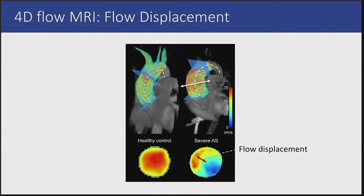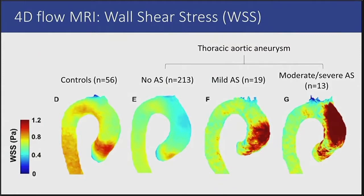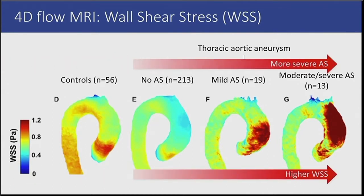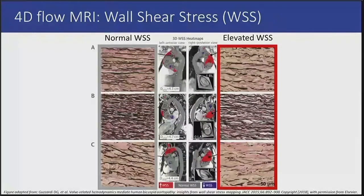If we look at why flow displacement could induce aortic dilatation, wall shear stress is a useful parameter to consider. It is defined as the viscous force of flowing blood acting tangentially on the vessel wall. With 4D-flow MRI, we can measure near-wall velocities and then calculate the wall shear stress. These images are from a study on patients with a thoracic aortic aneurysm and different degrees of aortic valve stenosis. It was hypothesized that AS would result in altered flow patterns and thus altered wall shear stress compared to controls — and this was indeed the case. Wall shear stress increased with increasing severity of the stenosis. Histopathological testing has shown that elevated wall shear stress, here depicted in red, can lead to elastic fiber degeneration in the aortic wall; the fibers are further apart where there is elevated wall shear stress compared to regions of normal wall shear stress.